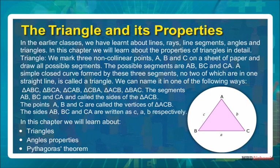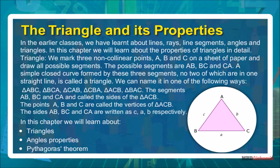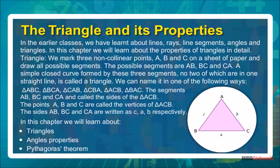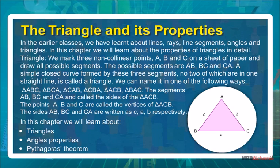Triangle: we mark three non-collinear points A, B and C on a sheet of paper and draw all possible segments. The possible segments are AB, BC and CA. A simple closed curve formed by these three segments, no two of which are in one straight line, is called a triangle.